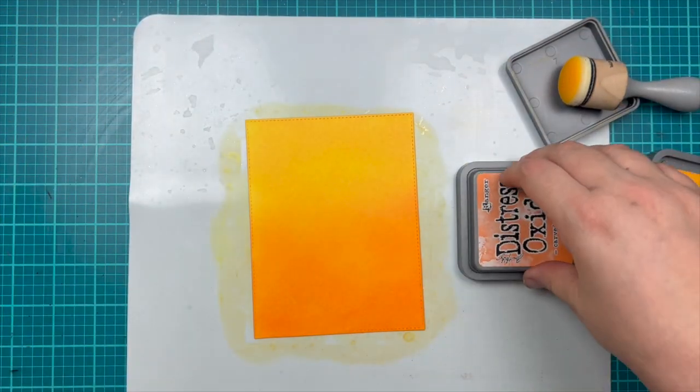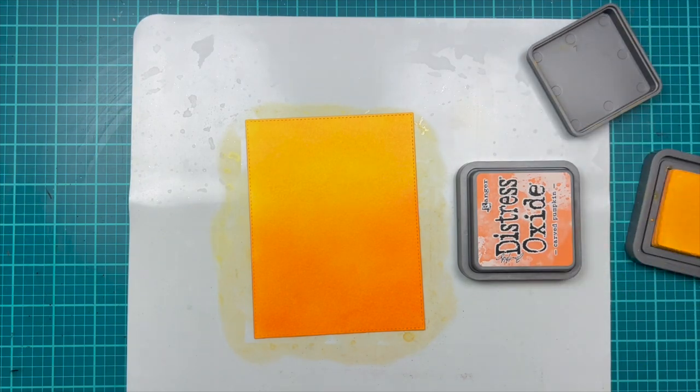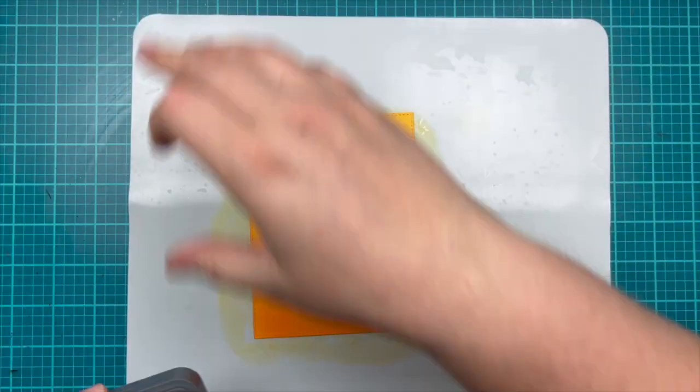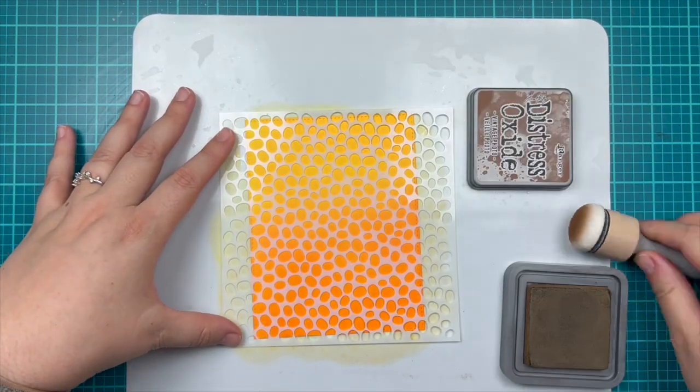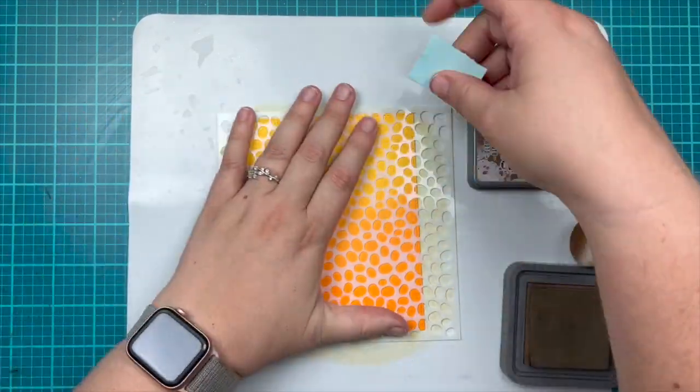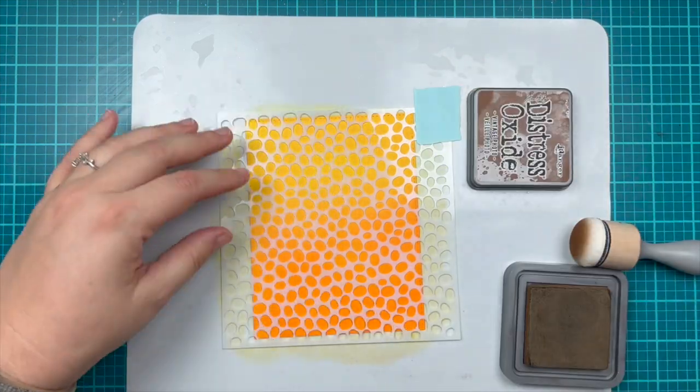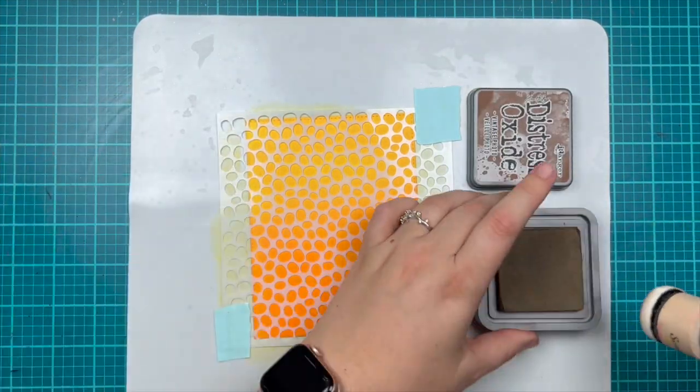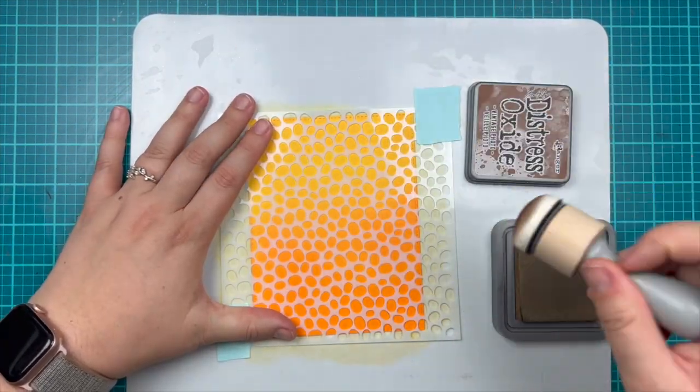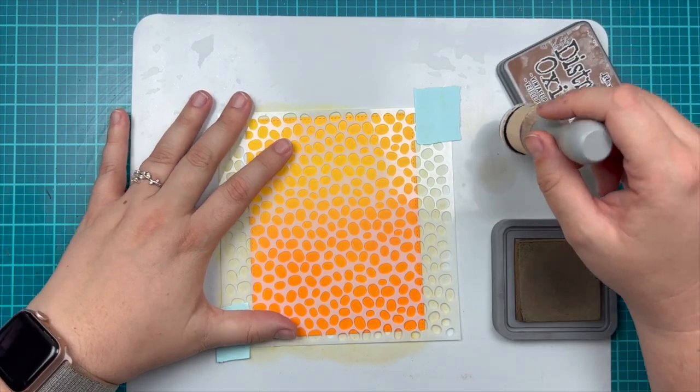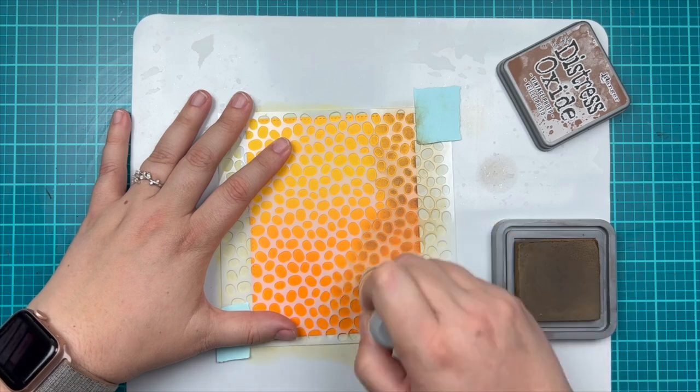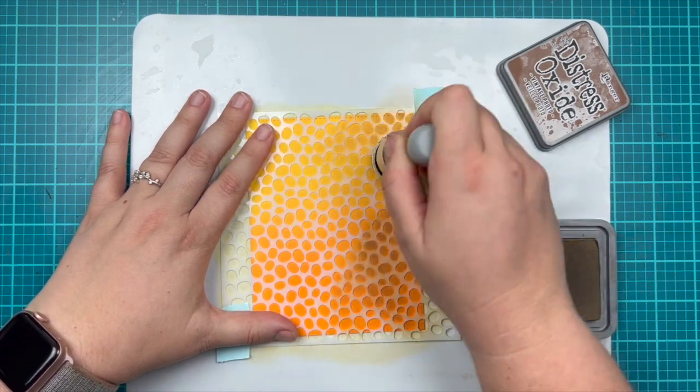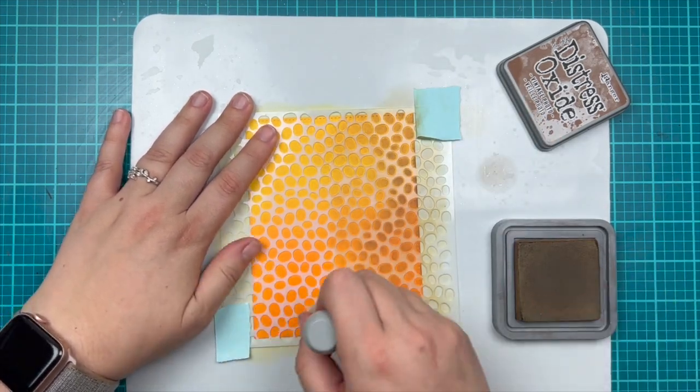Once I'm happy with how those two colors look, I'm going to grab my bean scene stencil and use vintage photo to add some brown to my card. I put that stencil on top of my cardstock, grab that tape to help keep it in place, and then go with a very light touch and add some of this vintage photo distress oxide on top of the stencil and on top of my orange and yellow background.